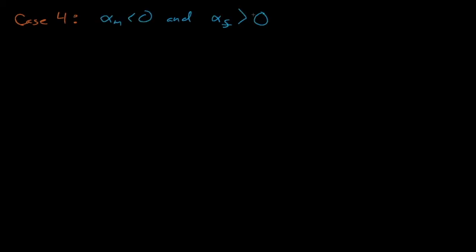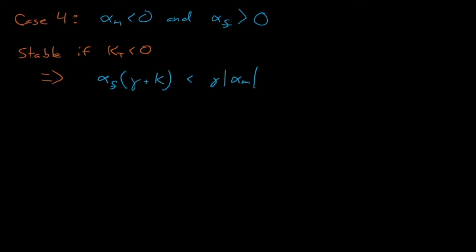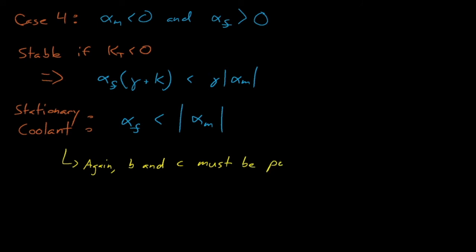For case four, we see negative moderator feedback and positive fuel feedback, running into the same stability condition as case three — k_t must be negative. To satisfy this condition, the requirements from case three are essentially flipped: alpha_f times gamma plus kappa must be less than gamma times the absolute value of alpha_m. If our coolant is stationary, then alpha_f must be less than the magnitude of alpha_m. Again, B and C must also be positive.